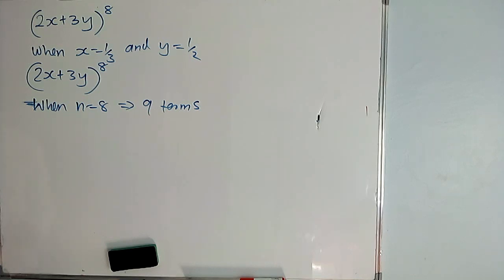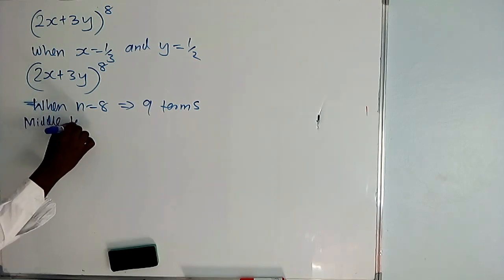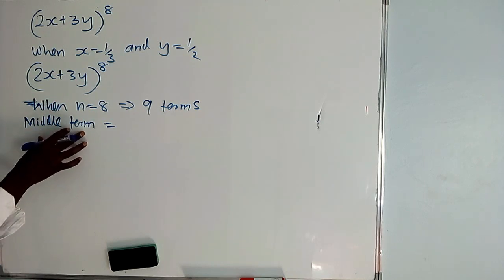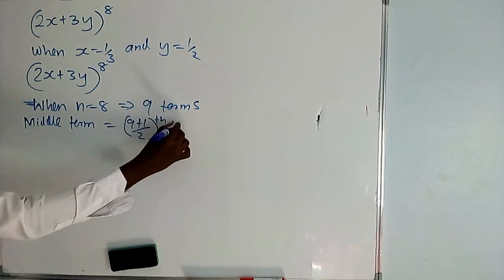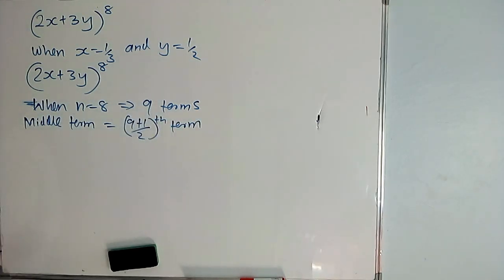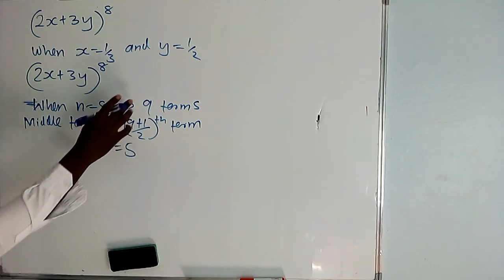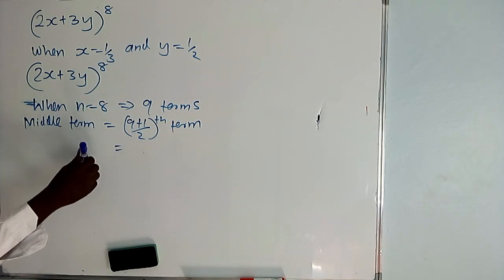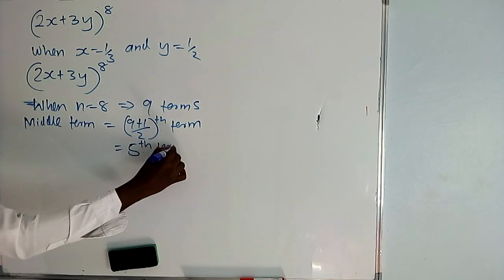When we have 9 terms, 9 is odd. So when you have an odd number of terms, it means there is only one term in the middle. So how do we get the middle term when it is odd? It is (9 plus 1) divided by 2 — just like the case we did in statistics when it is odd. So the middle term will be the 5th term.